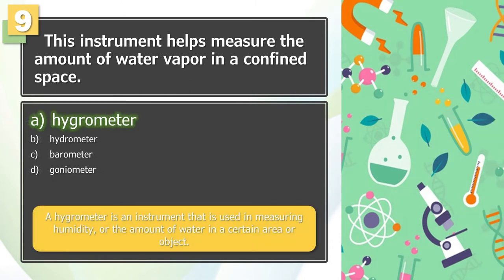The answer is A. A hygrometer is an instrument that is used in measuring humidity, or the amount of water in a certain area or object.